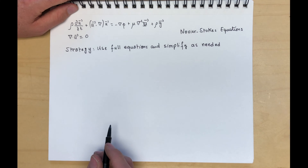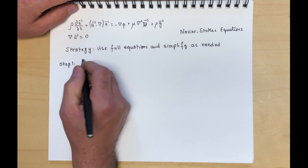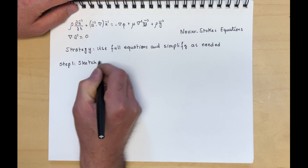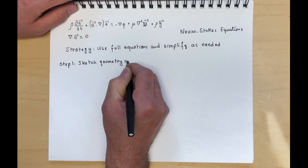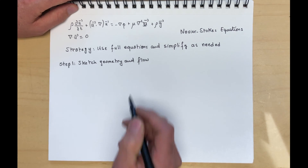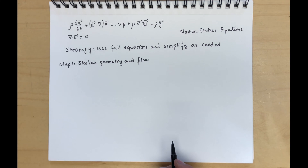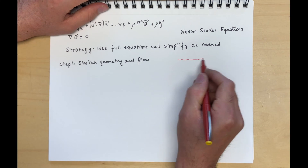To do this we will follow a few steps. Step 1: get an idea of what the flow is — sketch the geometry and flow, and what you expect the flow to be. The way I'm going to illustrate this is by using the Couette flow example.